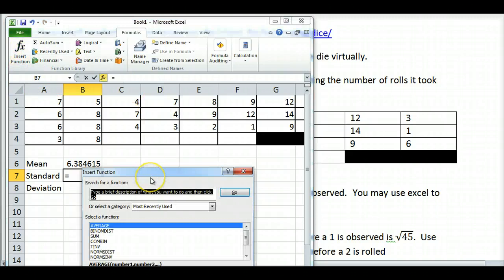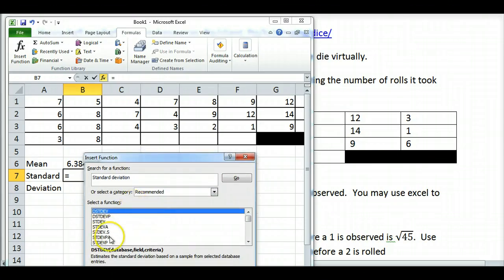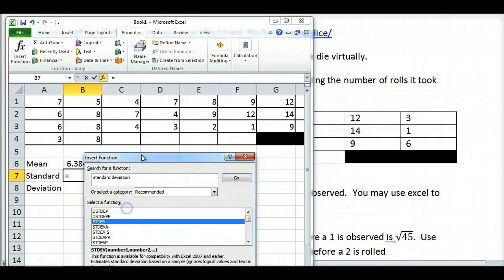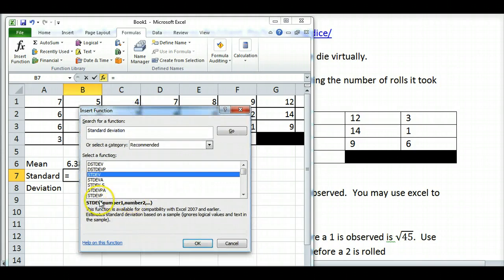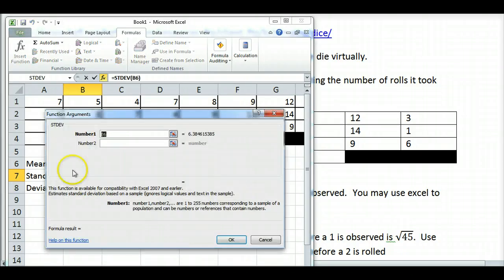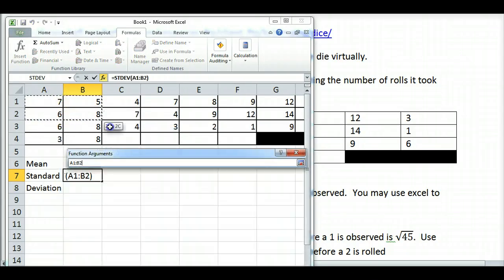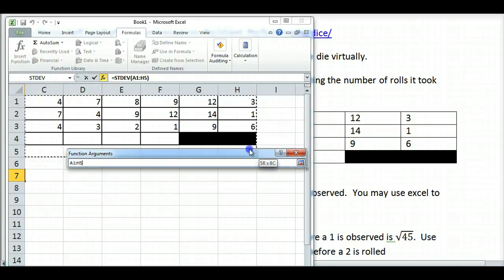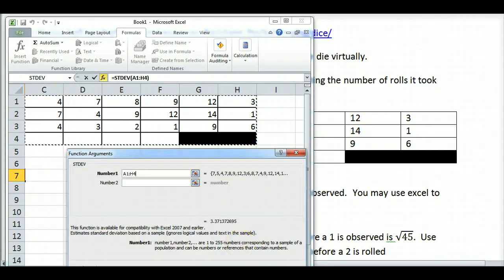I'm going to do something similar for standard deviation. Only instead of searching for average, I'll search for standard deviation. I want to use the value that comes up that's standard deviation of a sample. Depending on your version of Excel, it could be STDEV or STDEV.S. It doesn't matter which one - some of you have different versions of Excel, so it may be either one. They both work the same way. I'll highlight all of my data points, and this will give me the standard deviation which I'll need later.